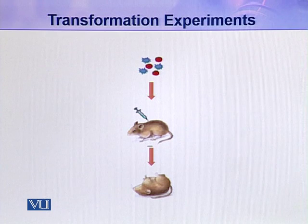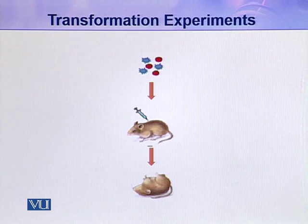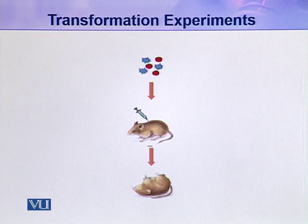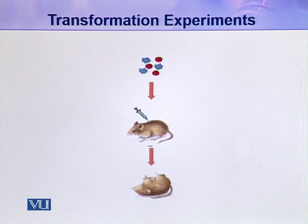When he took blood from these mice, he observed live S-type bacteria in their blood. This was very surprising for Griffith — how had the dead S-type bacteria been converted into live S-type bacteria?